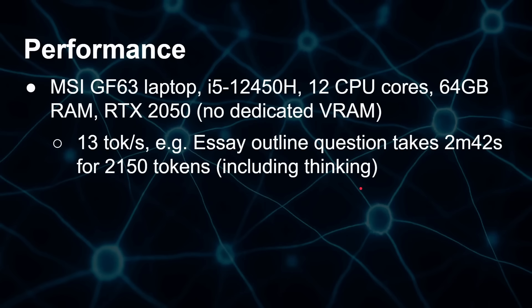On my MSI GF63 laptop with an i5 12th generation, 12 CPU cores, 64 gigs of RAM, and an RTX 2050 with no dedicated VRAM, you get 13 tokens per second — quite a bit faster than the Raspberry Pi. The Battle of the Bulge essay outline takes about two minutes 40 seconds, producing around 2,150 tokens including the thinking output.